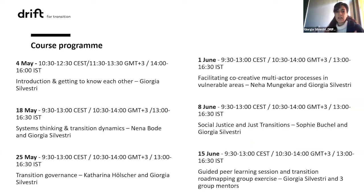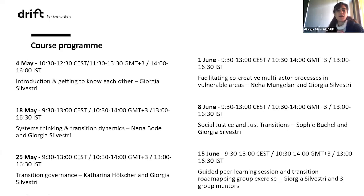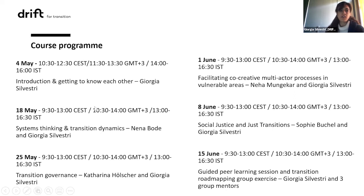In total there are 10 modules. The first block is before the summer, in May and June — it's more about getting to know each other, and then the other modules feature different drifters. In each module we go a bit more in depth on a specific case and share specific tools related to the topic. For example, the one on social justice and just transition will include a case on just mobility in the south of Rotterdam.